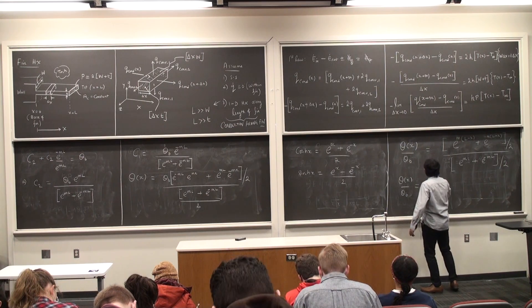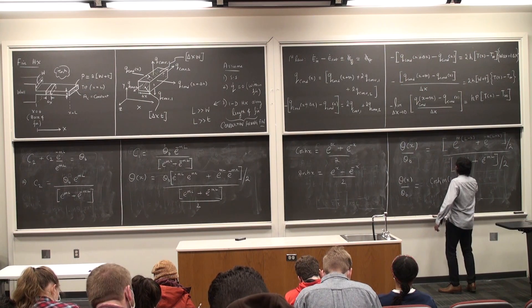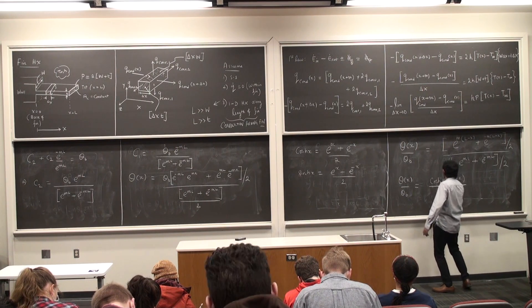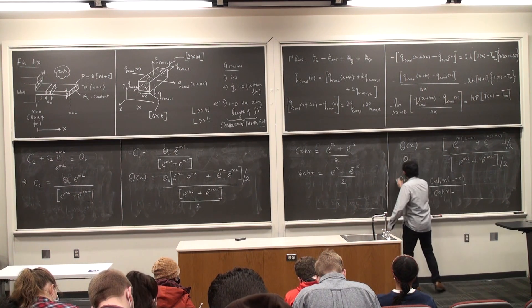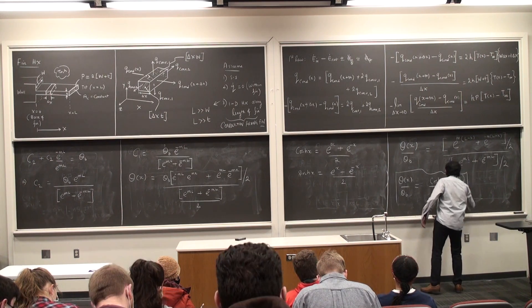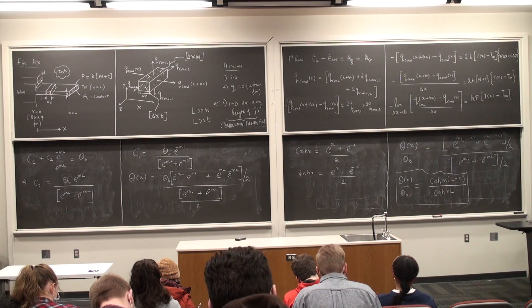This is cosine hyperbolic l minus x, cosine hyperbolic m f. That's not too bad.